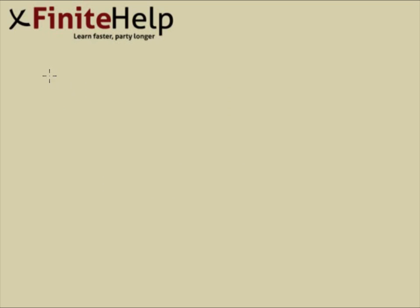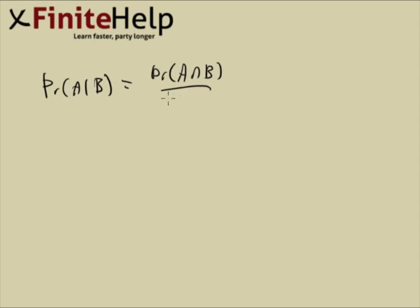The conditional probability formula is: probability of A given B equals the probability of A intersect B over the probability of B. We have A given B is 0.4 and A intersect B is 0.2, and we are trying to find the probability of B.